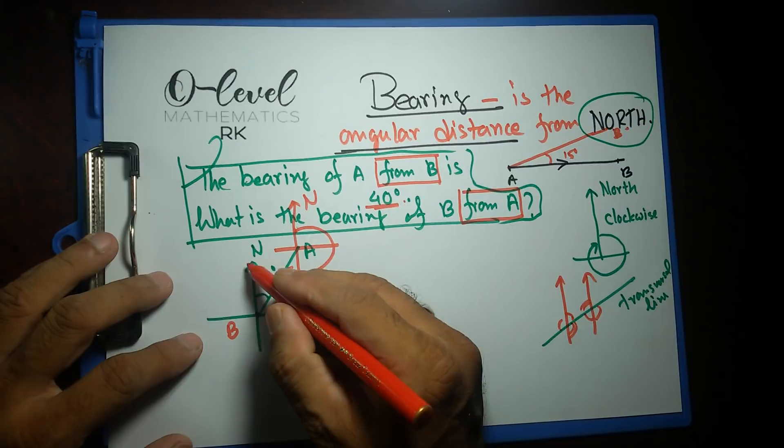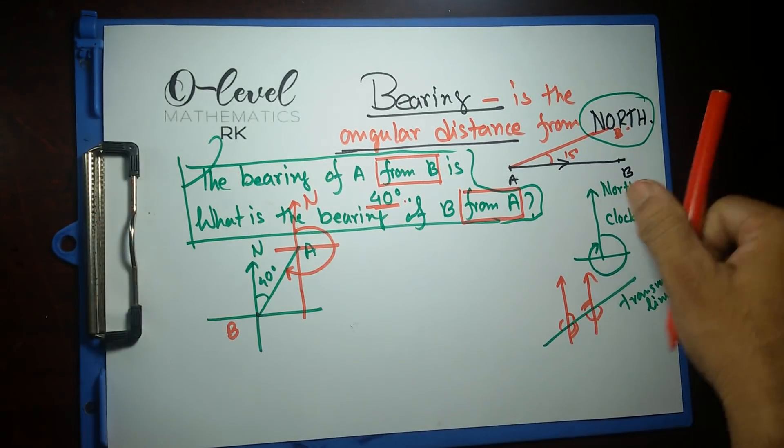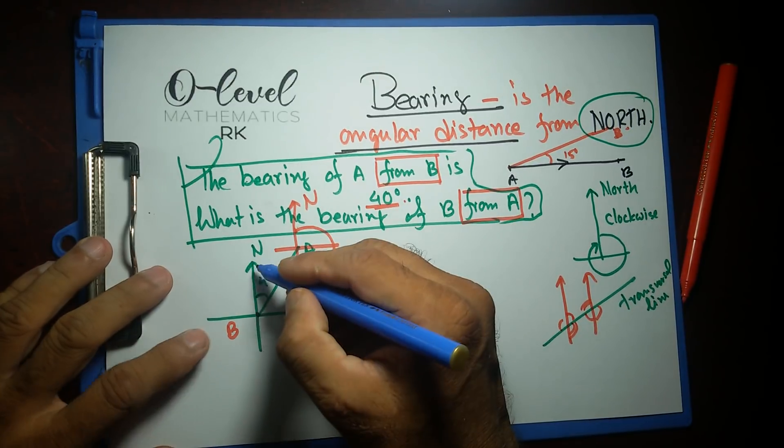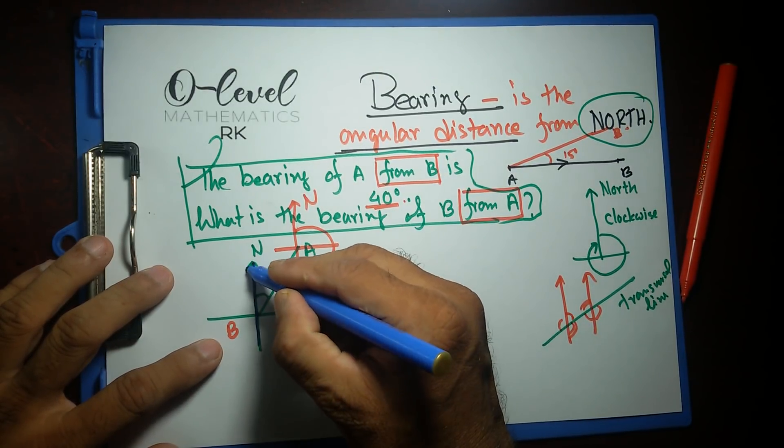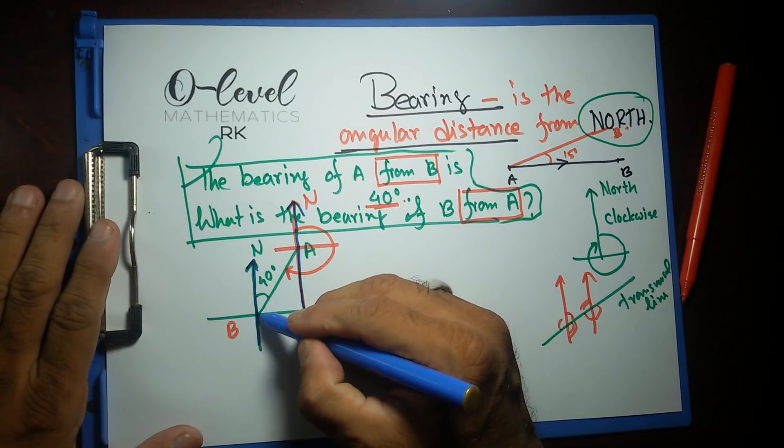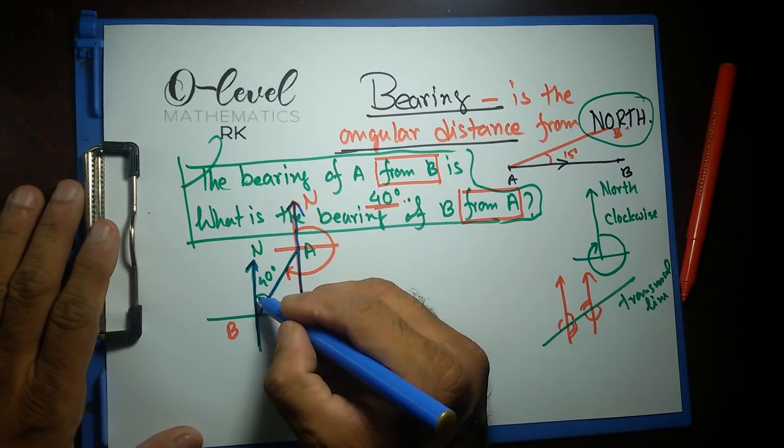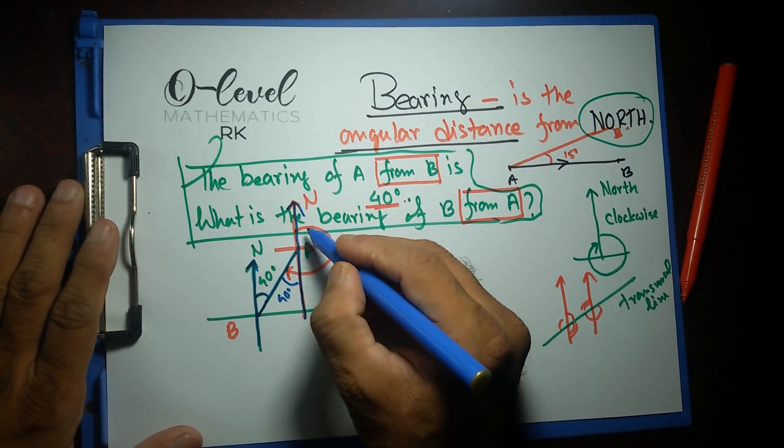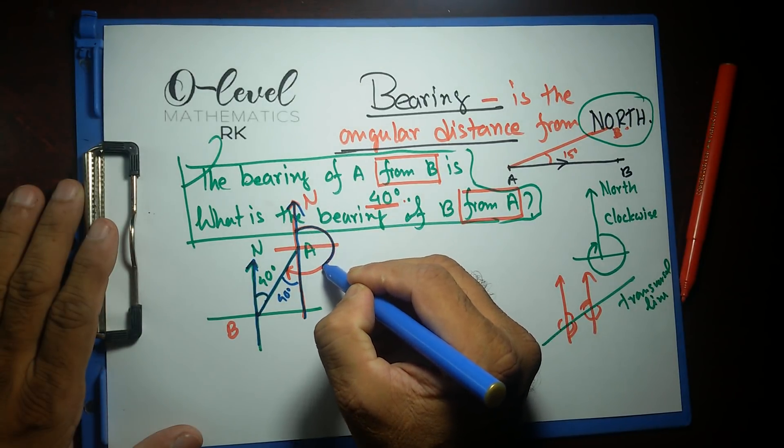Right now, this angle—these two are parallel lines. I'm gonna use a different color. These two lines are parallel. This is north of B, this is north of A, and they are parallel. And this is the transversal line if you look at here. So this angle and this angle has to be equal. It's 40 degrees.